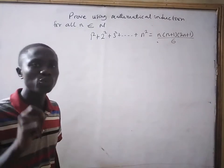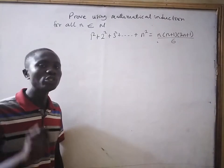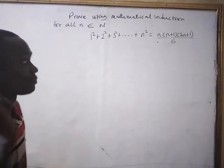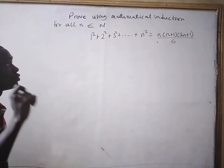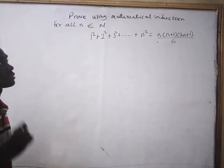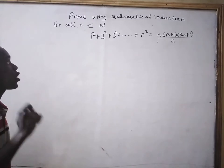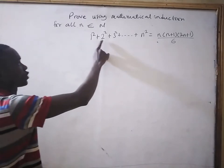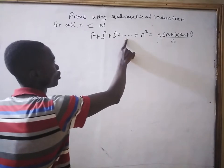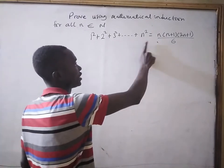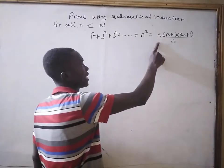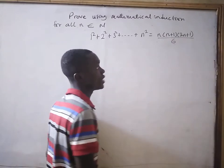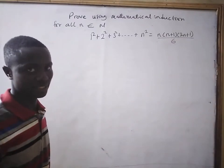In this lesson, we are going to prove using the principle of mathematical induction. Proof, using mathematical induction for all n such that n is a natural number: 1 squared plus 2 squared plus 3 squared plus ... plus n squared equals n times (n plus 1) times (2n plus 1) all divided by 6.